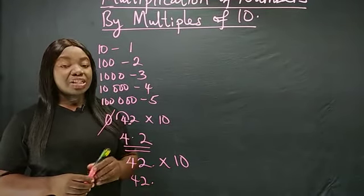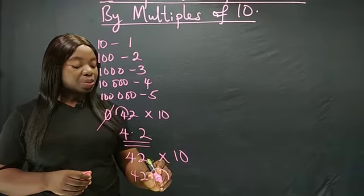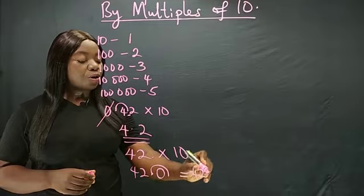10 has just single zero. So you count 1. Then this empty space, you fill it up with zero. So the answer is 420.